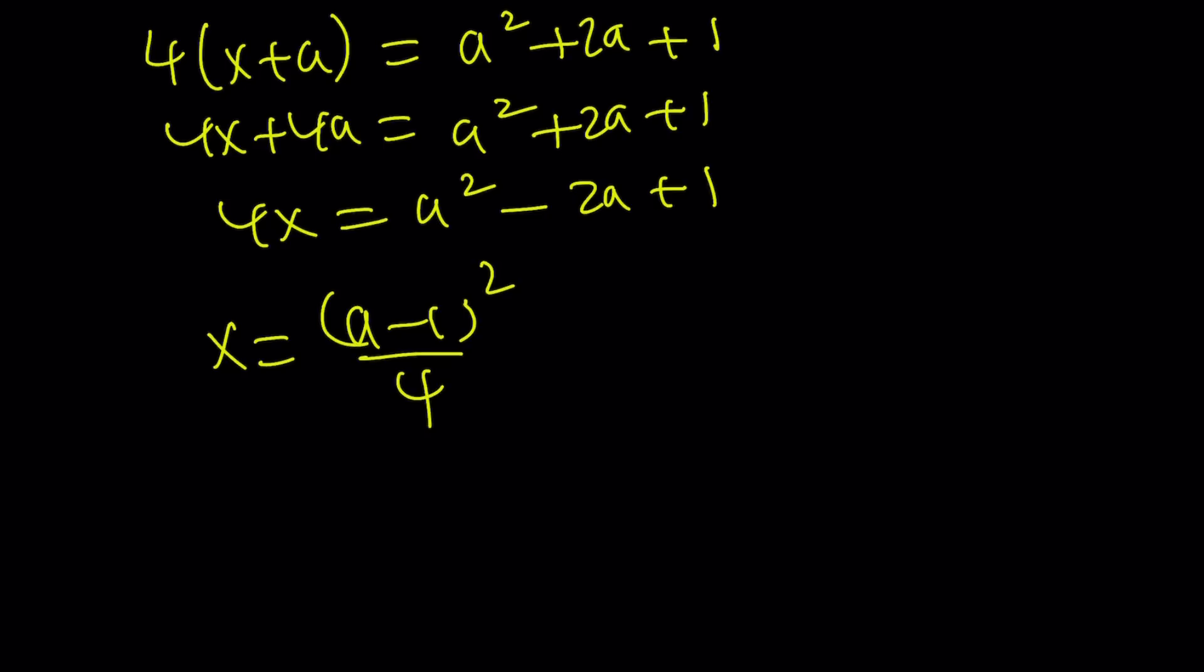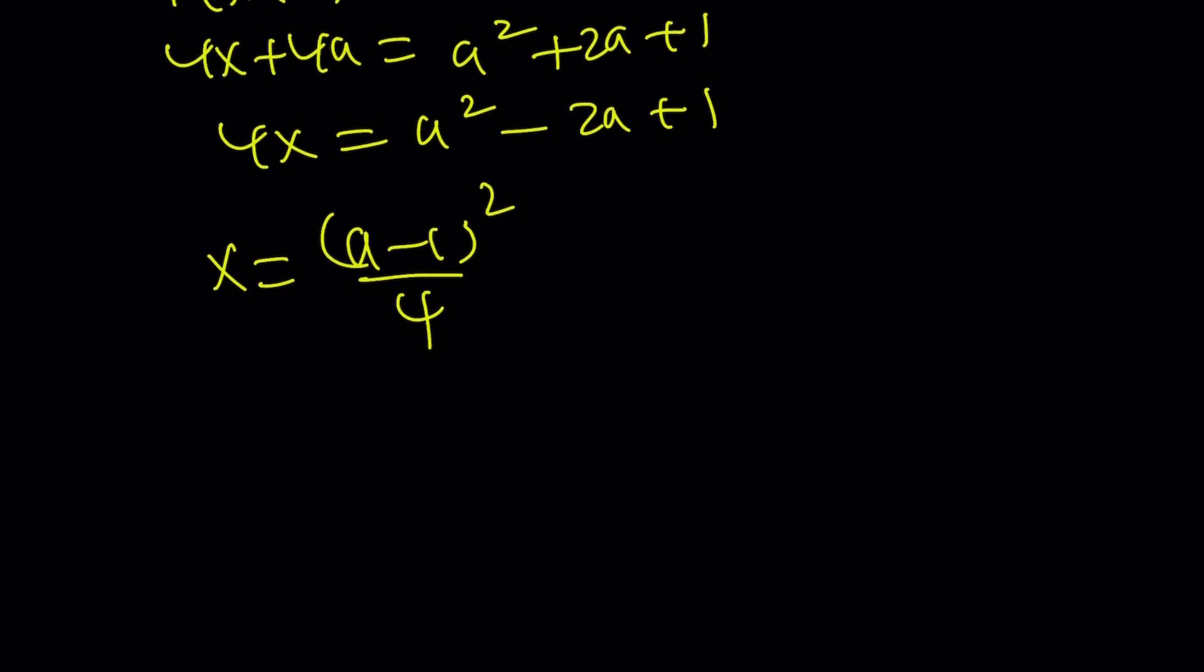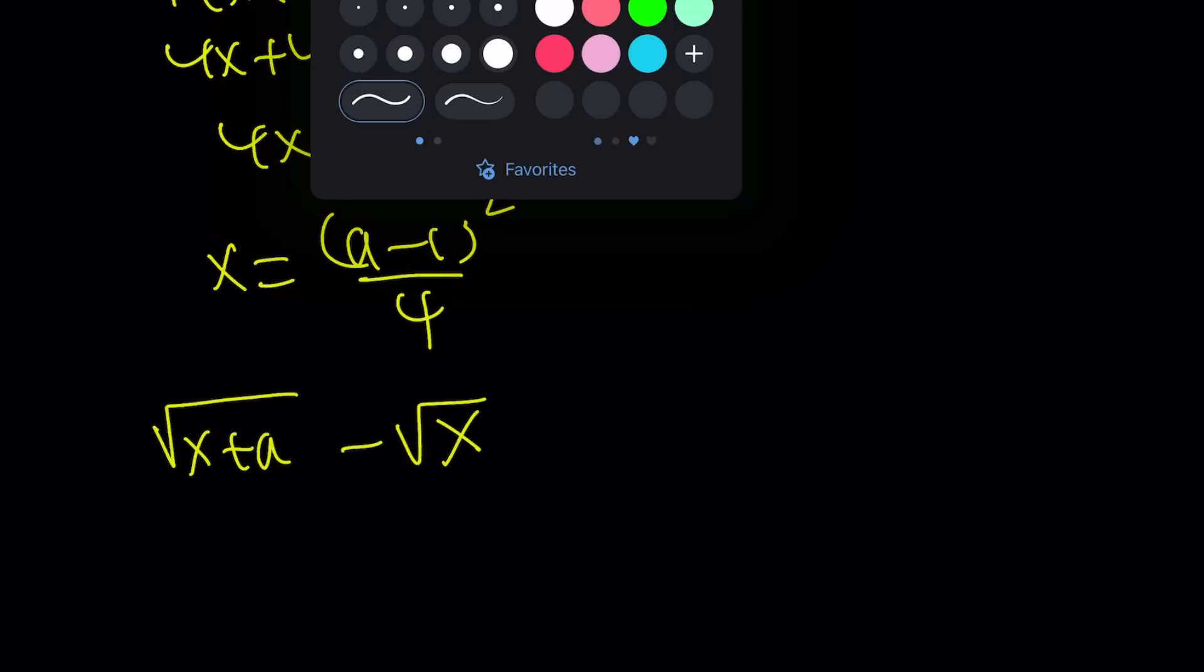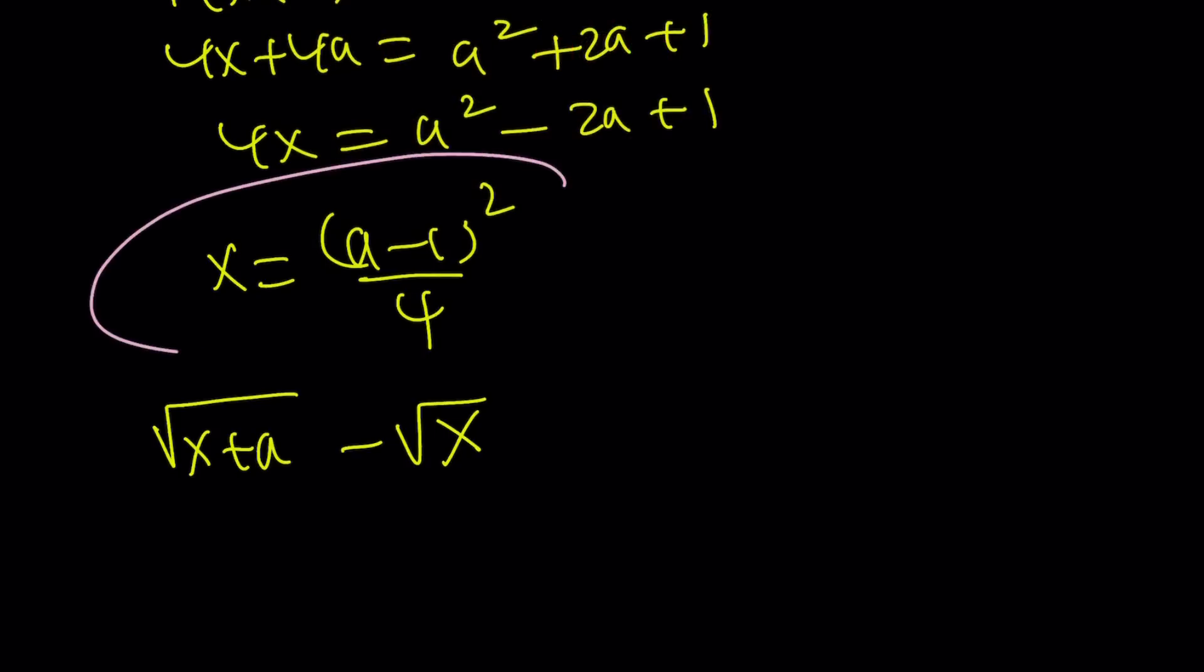So from here, x we can write it as a minus 1 quantity squared divided by 4. Cool. So that is the x value, but we're not looking for x. We are trying to find the value of square root of x plus a minus the square root of x. But it's easy because we got an expression for x when we can just use it.